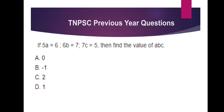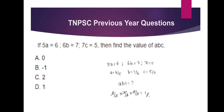Next sum: 5a = 6, so a = 6/5. 6b = 7, so b = 7/6. 7c = 5, so c = 5/7. The product a × b × c = (6/5) × (7/6) × (5/7). All of them cancel out. Answer is 1. Option D.